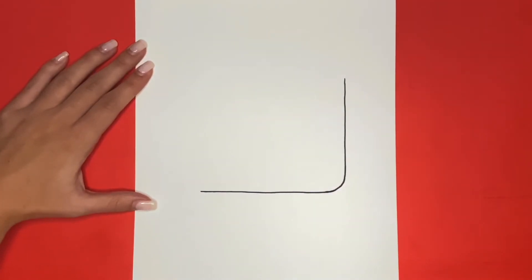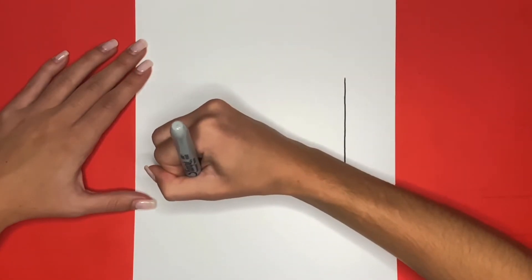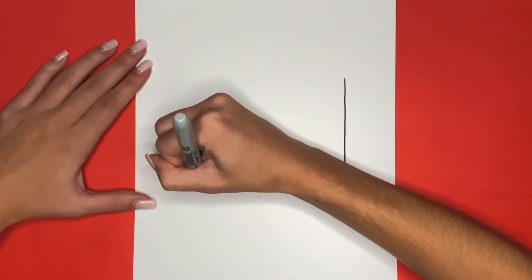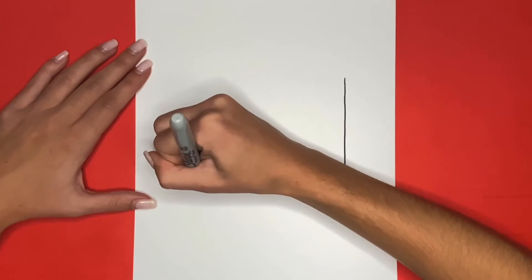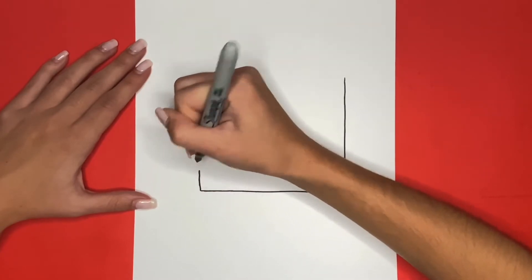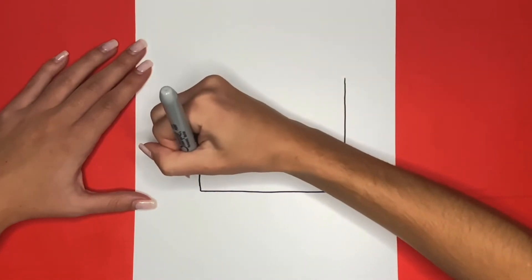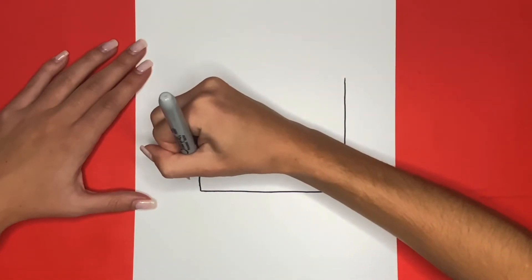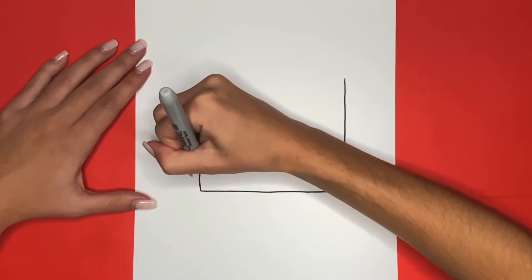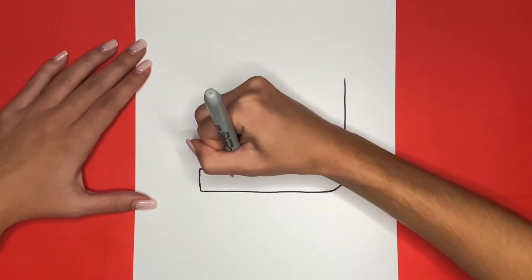Now from the left of that line, we are going to draw a small straight line going upwards. Then from that, we are going to draw a straight line going towards the right. This line will end near the line that we drew going up and down, but there is going to be a space in between the two.